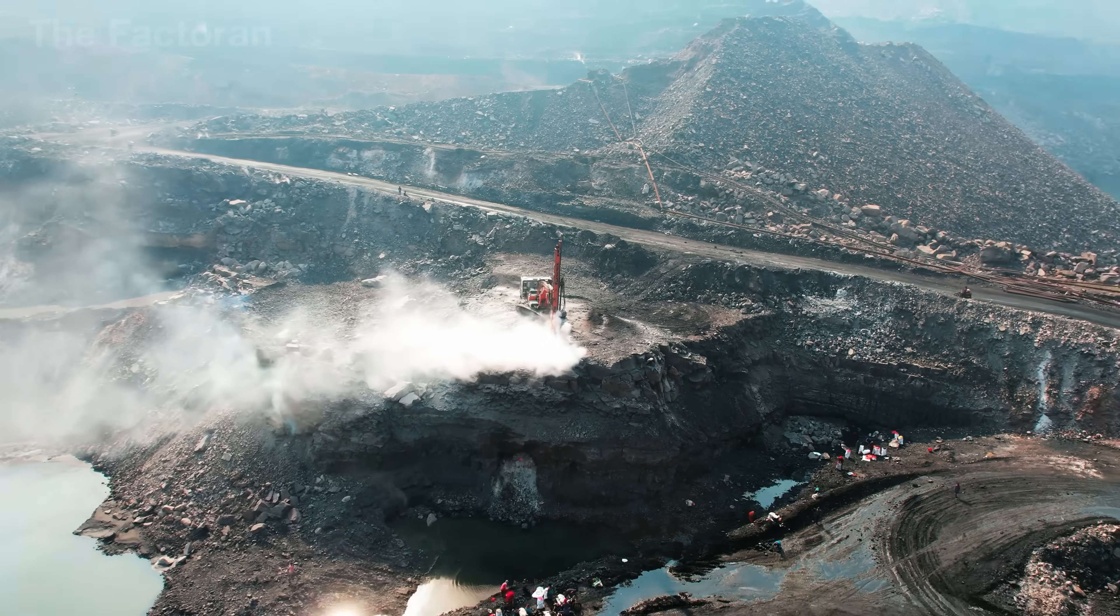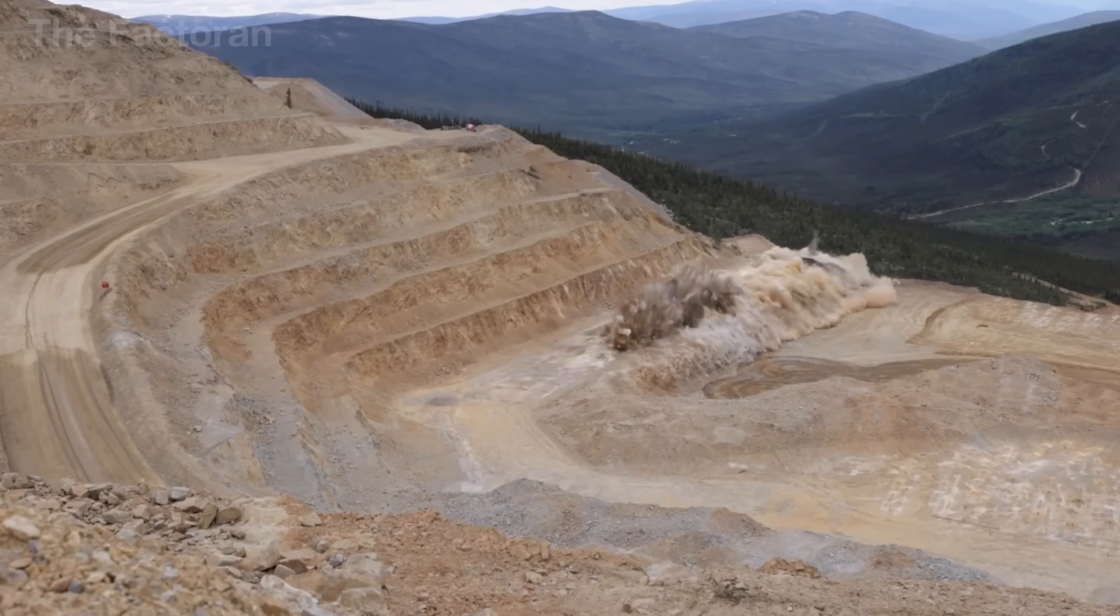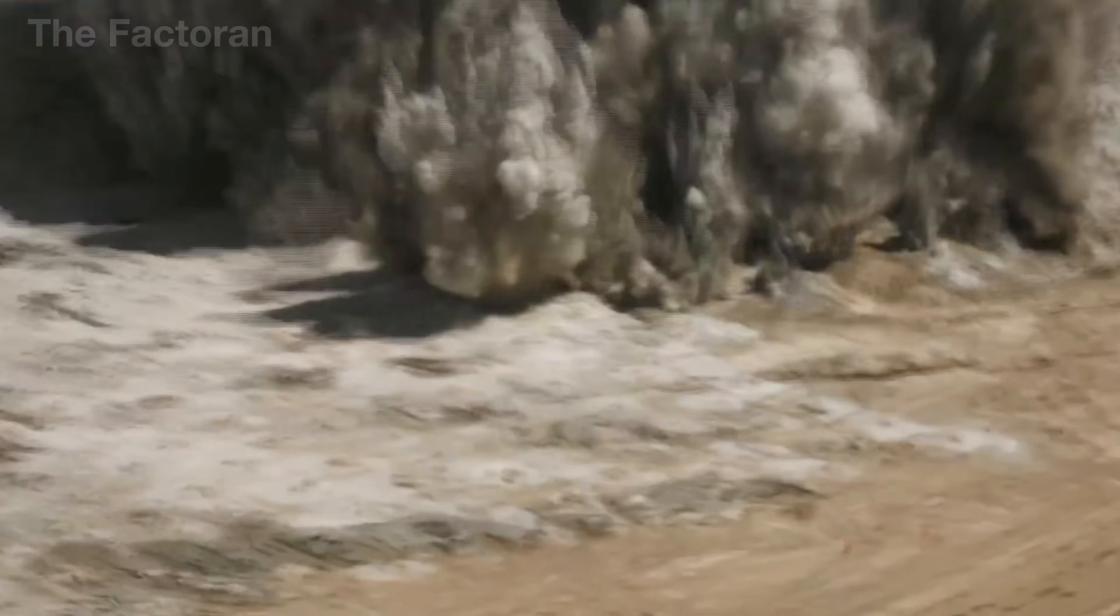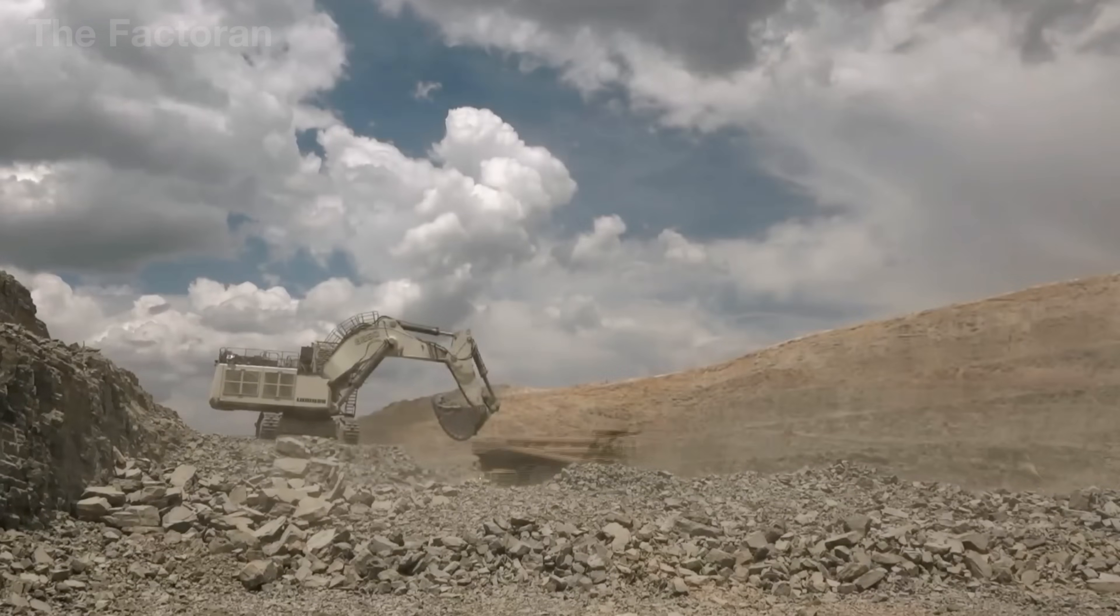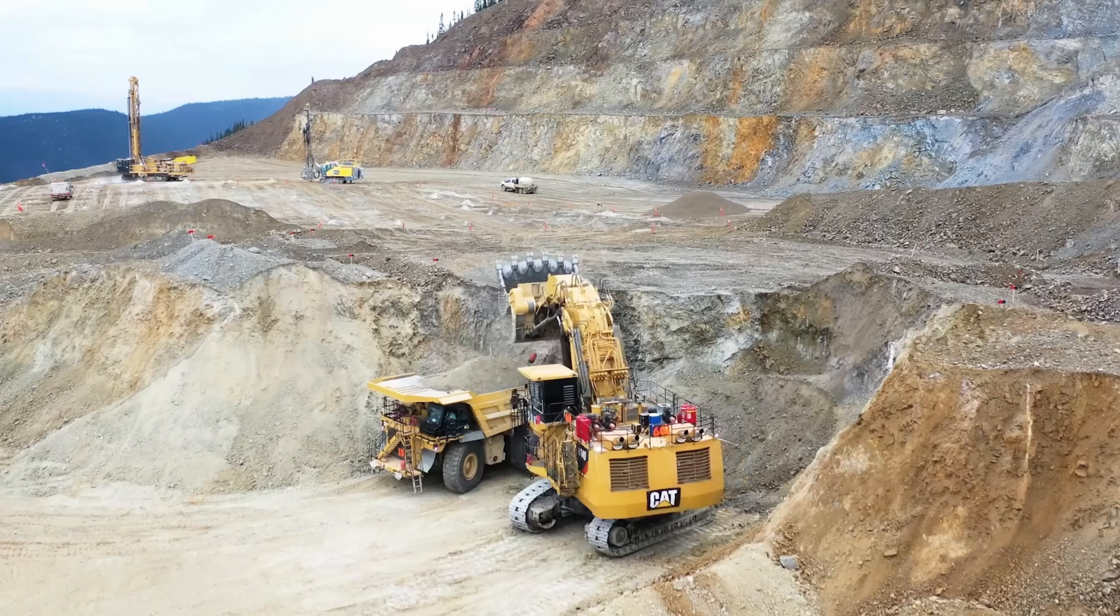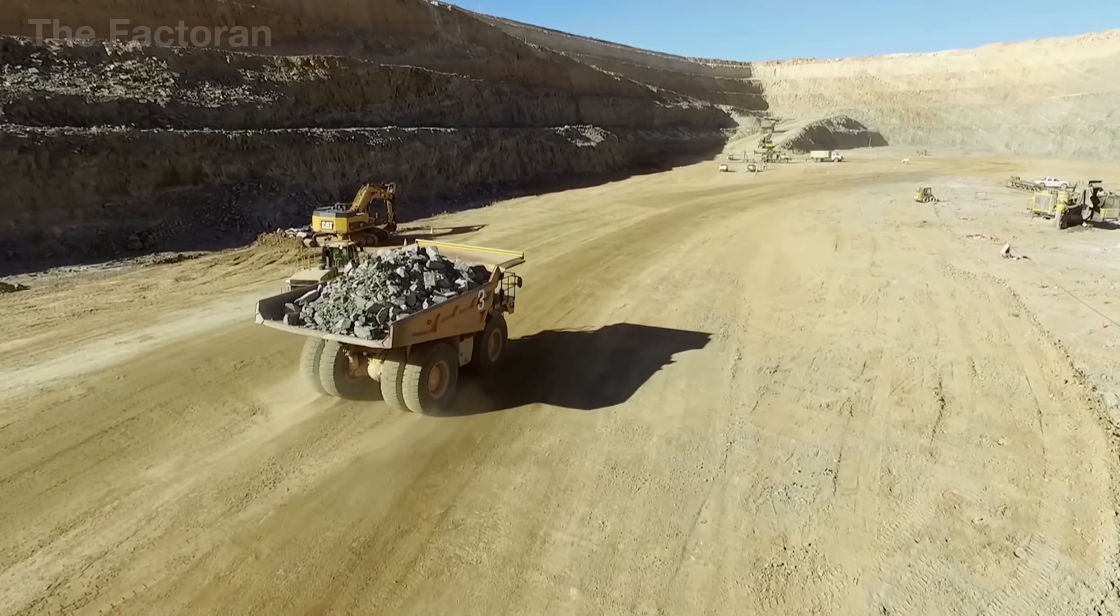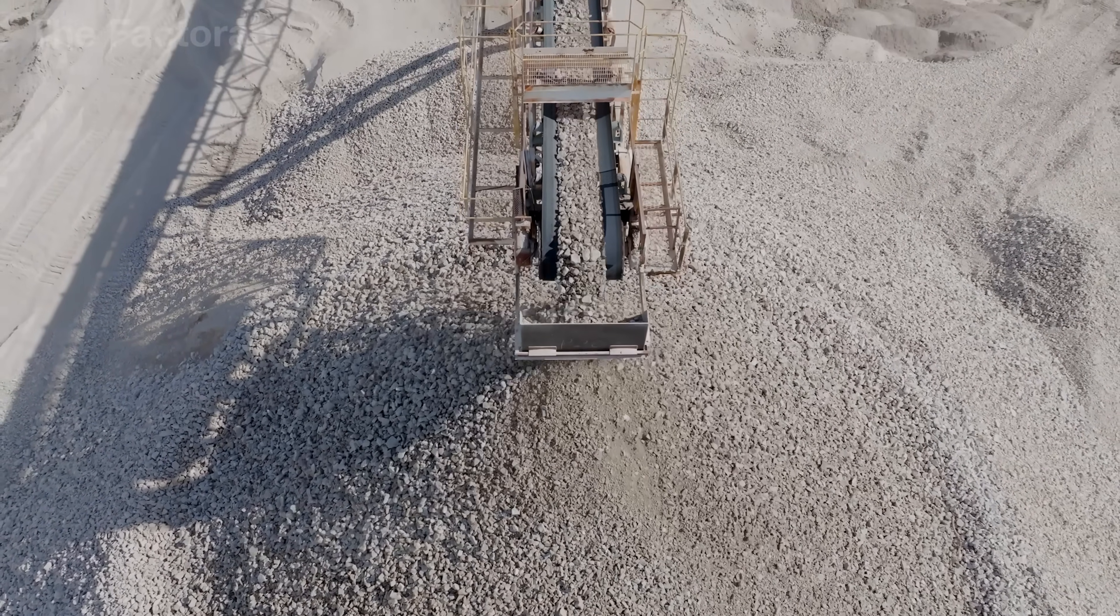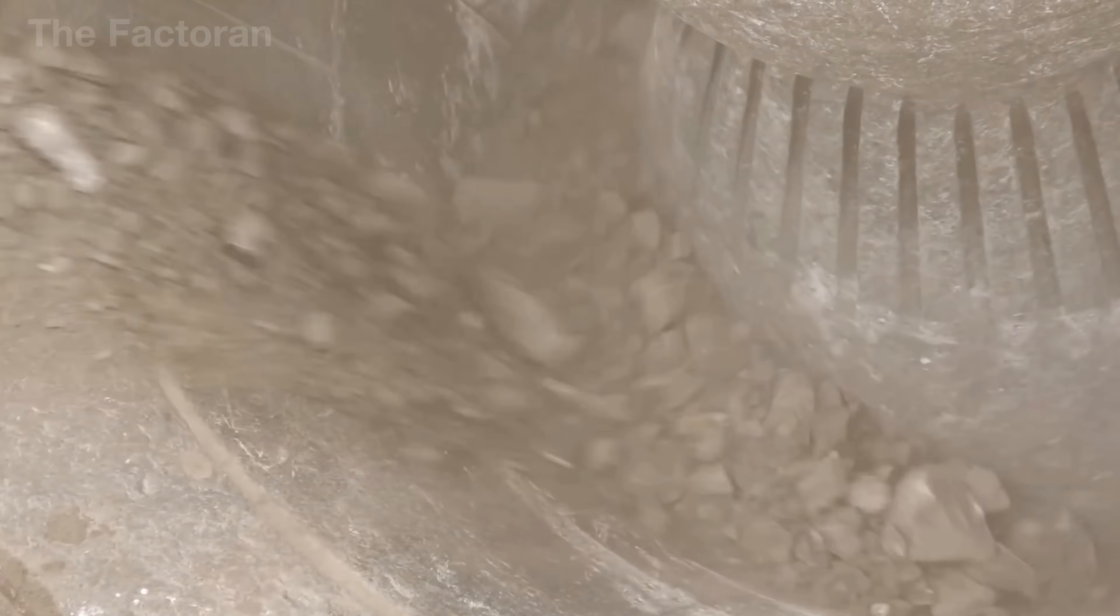At the bauxite mine, the extraction process begins. To break through the hard layers of ore, engineers perform controlled drilling and blasting, releasing the bauxite from the parent rock. Massive excavators and haul trucks move continuously, digging and transporting the ore from the surface layers down to the collection site. The ore is then conveyed along long belts through high-capacity crushing systems, where it is sorted and separated from impurities.